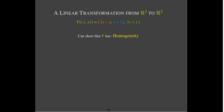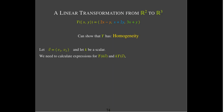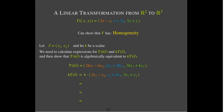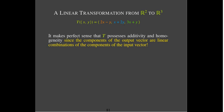Moving on to homogeneity: we need one vector and a scalar. We calculate T(kv) by multiplying all components by k, then compare with k·T(v) by substituting v₁ and v₂ into the formula and distributing k to each component. Sure enough, after removing parentheses we get the exact same expression as T(kv). So both additivity and homogeneity hold, confirming this is a linear transformation.